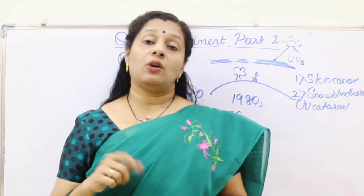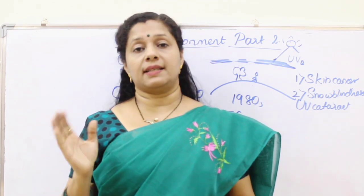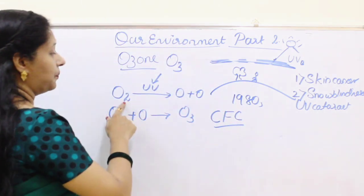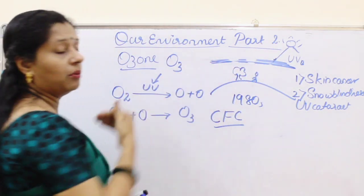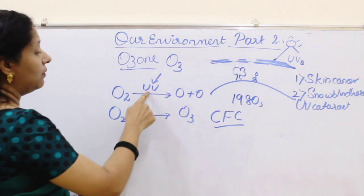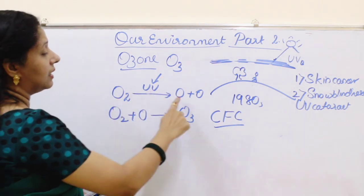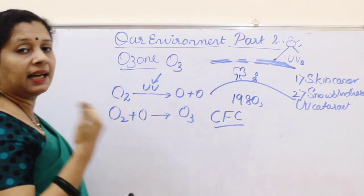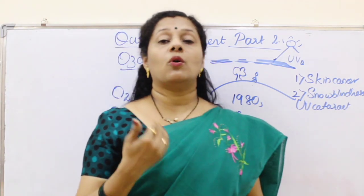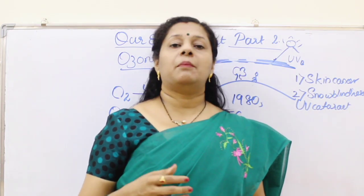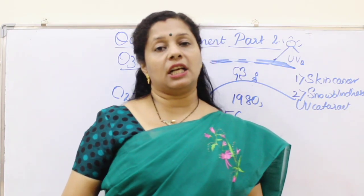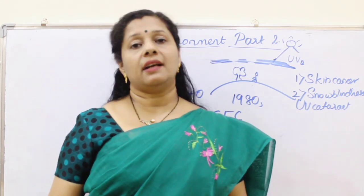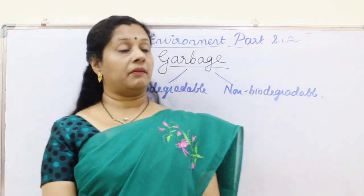When looking at the ozone layer, oxygen O2 splits into O and O, which then combines to form O3 — that is how ozone is made. Now, if it is depleted and not replenished due to CFCs, there is a great issue for the future.